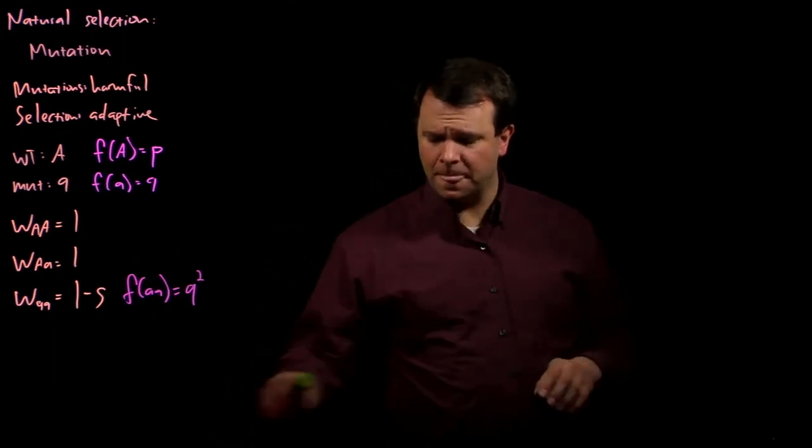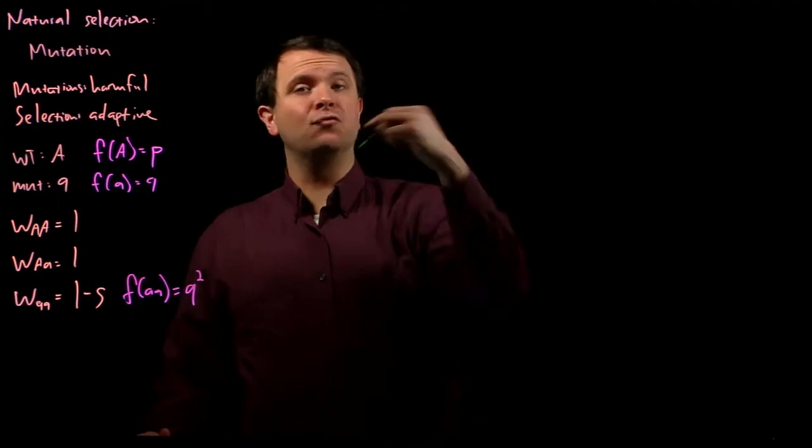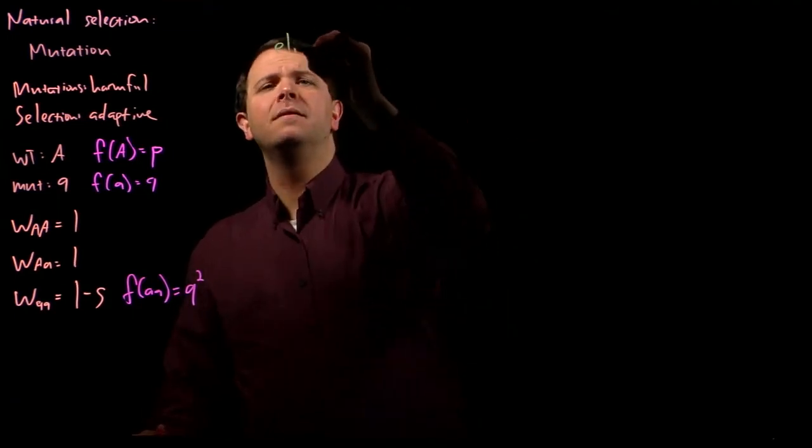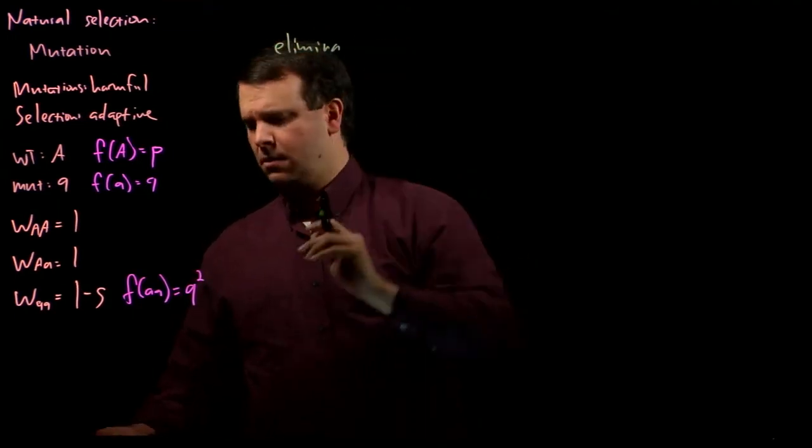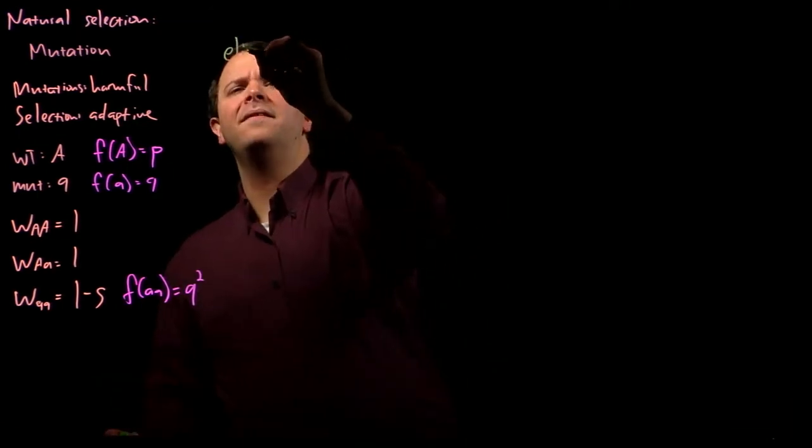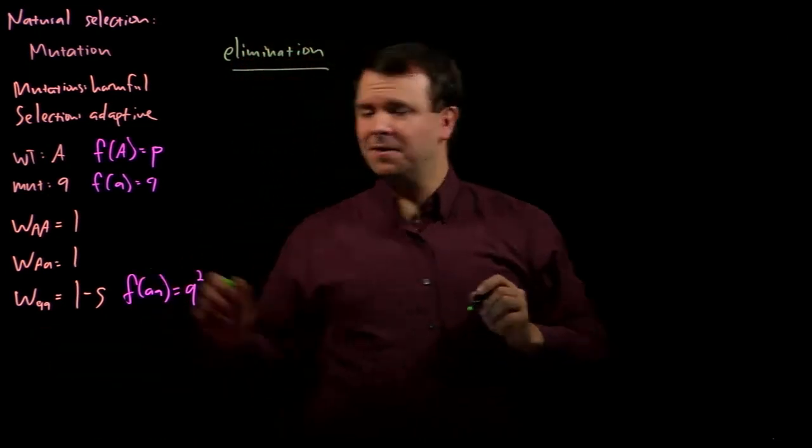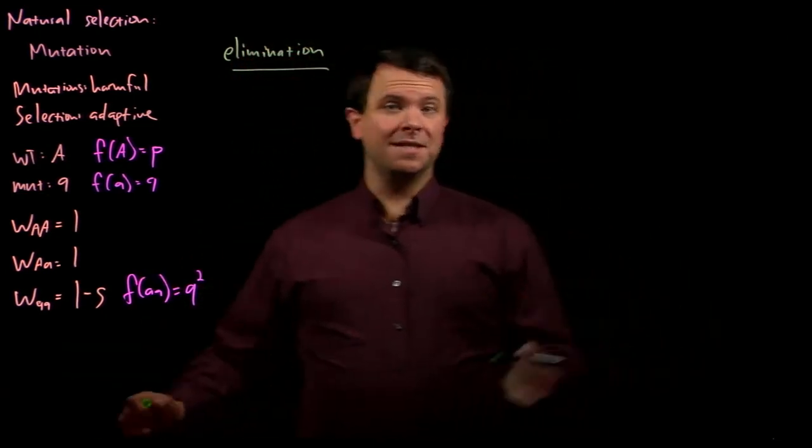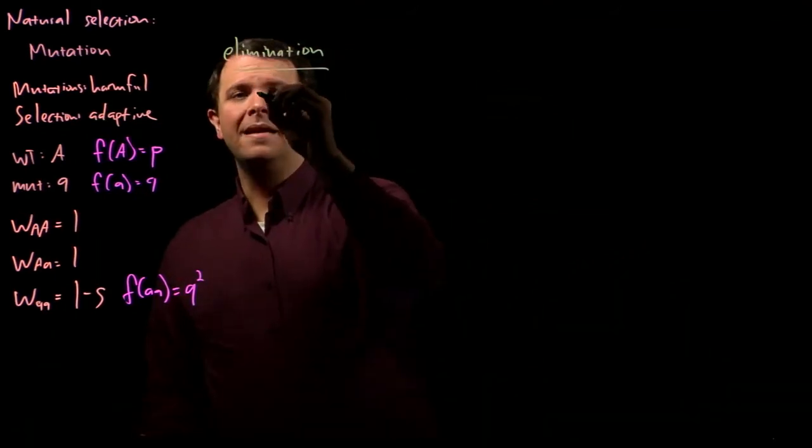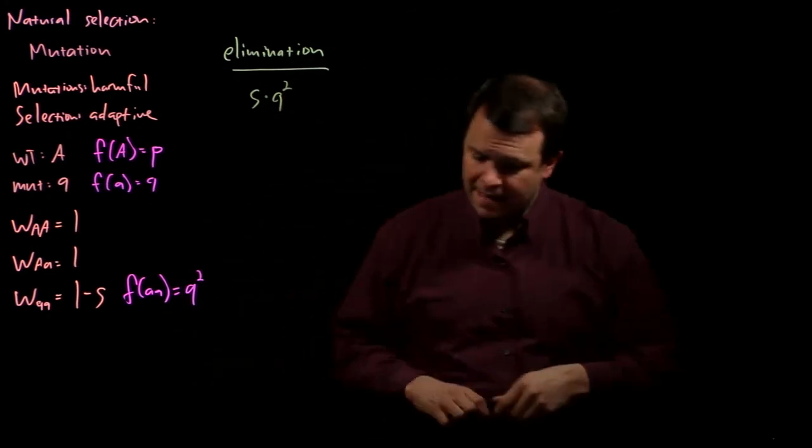Each generation, the proportion of alleles, the rate of elimination of little a alleles due to selection is S times Q-squared.